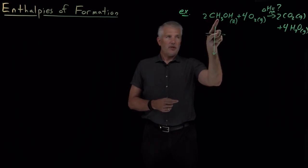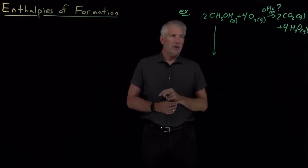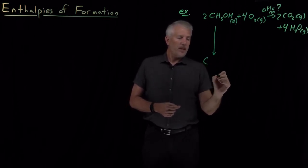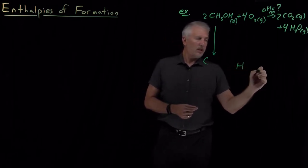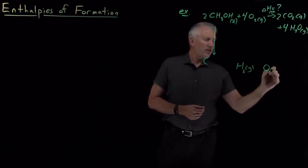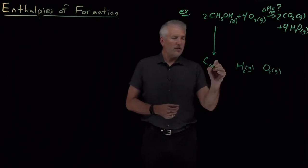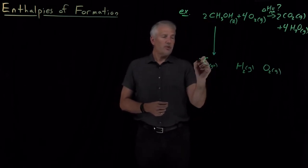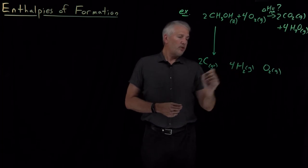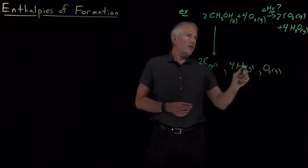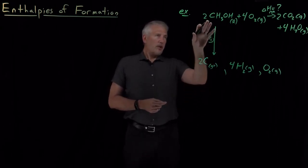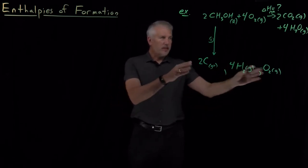Methanol is composed of carbons, hydrogens, and oxygens. If I break that down to form elements in their standard states: hydrogen gas, oxygen gas, and graphite for carbon. Two methanol will produce two atoms of graphite, four molecules of H2, and one molecule of O2. That's what I'll call reaction number one — breaking down methanol into elements in their standard states.